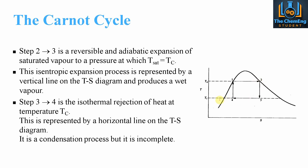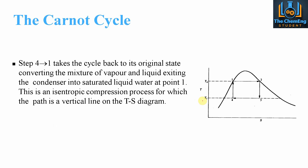From three to four is the isothermal rejection of heat — the opposite of one to two. At constant temperature Tc, we reject heat, decreasing the entropy from its value at point three to that at point four. Then from four to one, the cycle completes by converting the mixture of vapor and liquid in the condenser back into saturated liquid at point one.